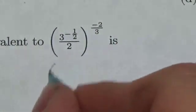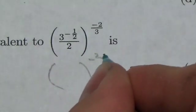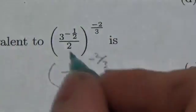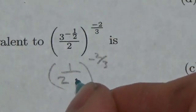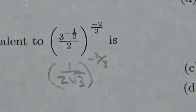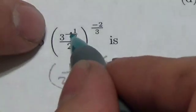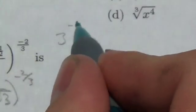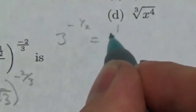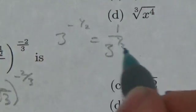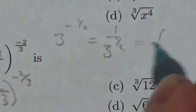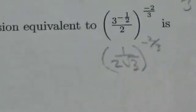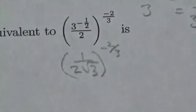We've got 3 to the negative 1 half over 2. That 3 to the negative 1 half — that negative is going to drop it down into the denominator. So this is going to end up being 2 and then the square root of 3 there. That 3 to the negative 1 half means 1 over 3 to the 1 half. And remember that a rational exponent is the same as a square root — in this case the denominator is 2, so it's a square root. That puts this whole thing down into the denominator.